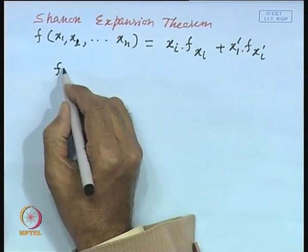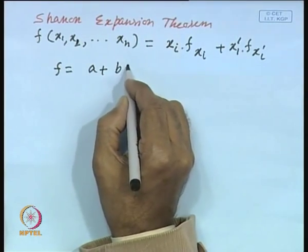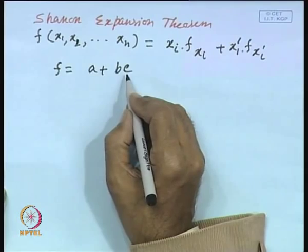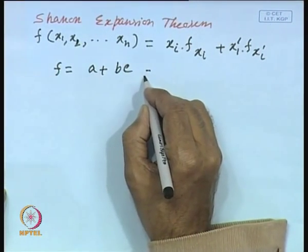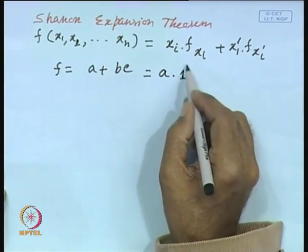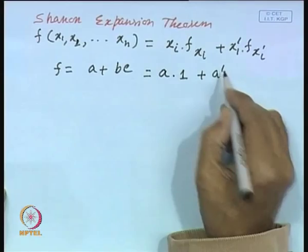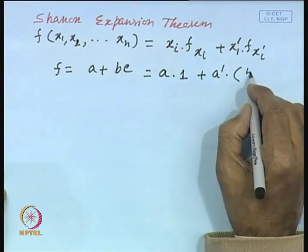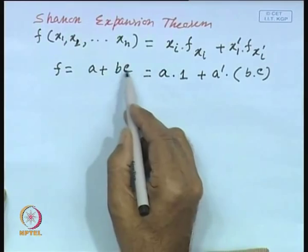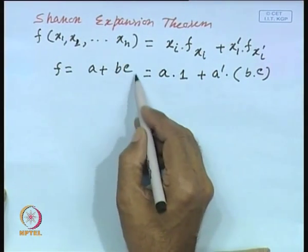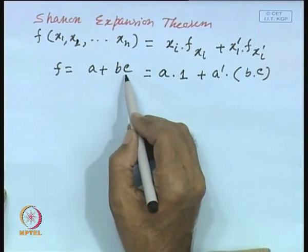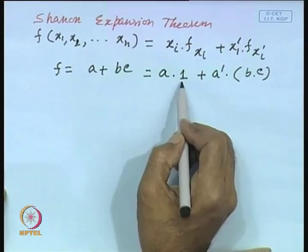Let me illustrate with an example. Suppose f equals a plus bc. We can expand around any one of the three variables — let me expand around a. This can be represented as a·1 plus a̅·bc, because when a equals 1, the reduced function is 1 (and 1 plus bc becomes 1), and when a̅ equals 1, the reduced function is bc. This is the reduced function: when a̅ equals 1, only this part is true.